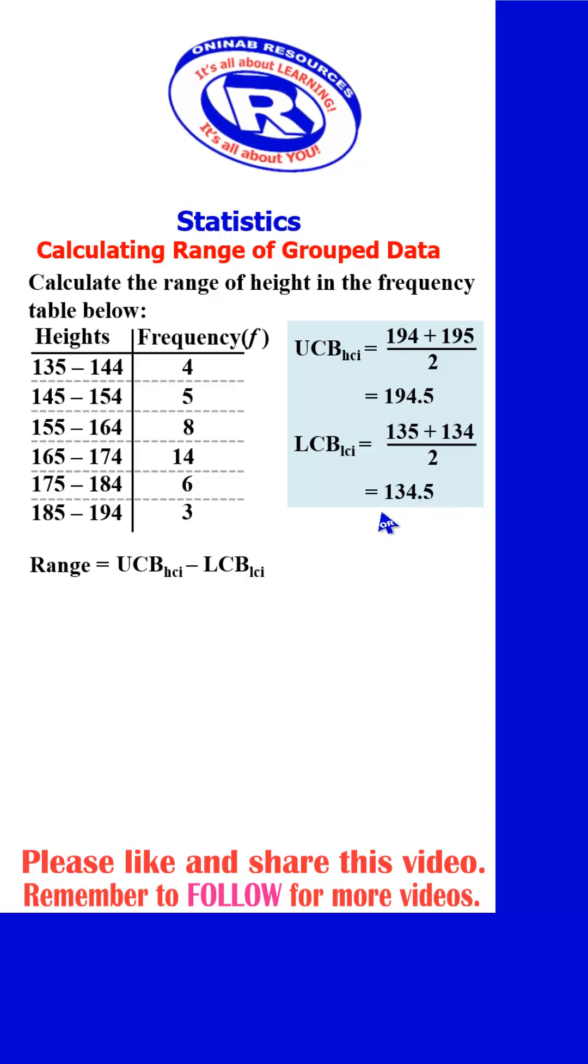We substitute the two values into the formula. The upper class boundary of the highest class interval is 194.5. Then minus the lower class boundary of the lowest class interval is 134.5. Subtracting this, we have our range of this distribution to be 60. And that's all for the solution of this problem.